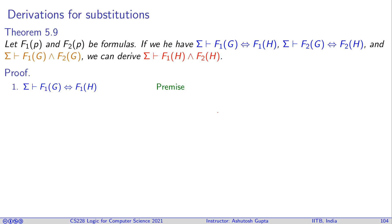Consider this theorem 5.9 where you have f1(p) and f2(p), two formulas available to you, and somehow you know that sigma proves that f1(G) is equivalent to f1(H) and f2(G) is equivalent to f2(H). You also know that sigma also proves f1(G) and f2(G). Given these three facts you should be able to derive sigma proves f1(H) and f2(H).